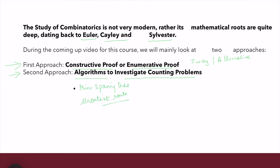The second approach could be slightly analytic, where we look for algorithms to investigate counting problems. For example, if you want a minimal spanning tree or the shortest path problem, all these algorithmic problems have their roots going back into the counting problem.